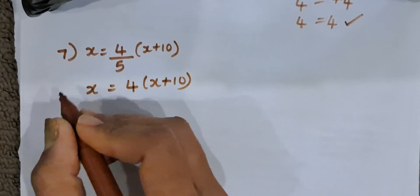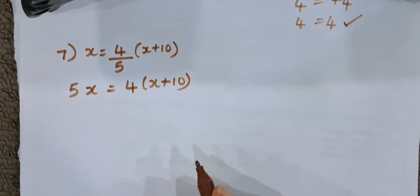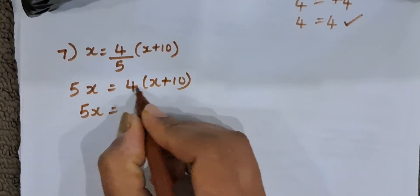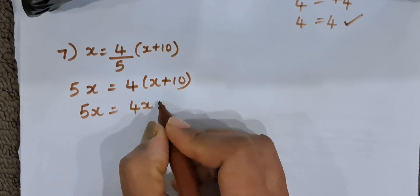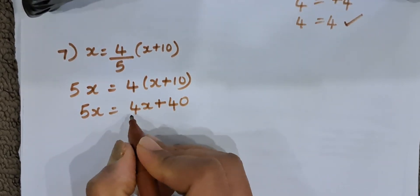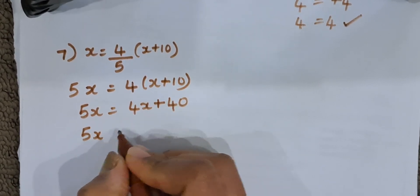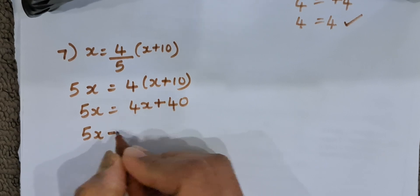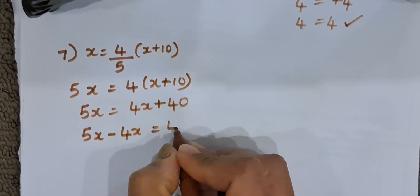This 5 we will take on the left hand side, so it becomes 5x. 5x is equal to 4 into x plus 10. So, 5x is equal to 4 into x is 4x plus 4 into 10 is 40. Now, we will take 4x on the left hand side. 5x minus 4x is equal to 40.